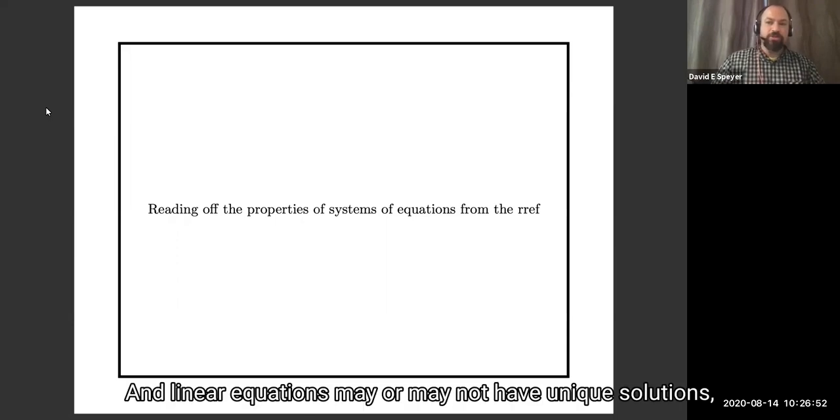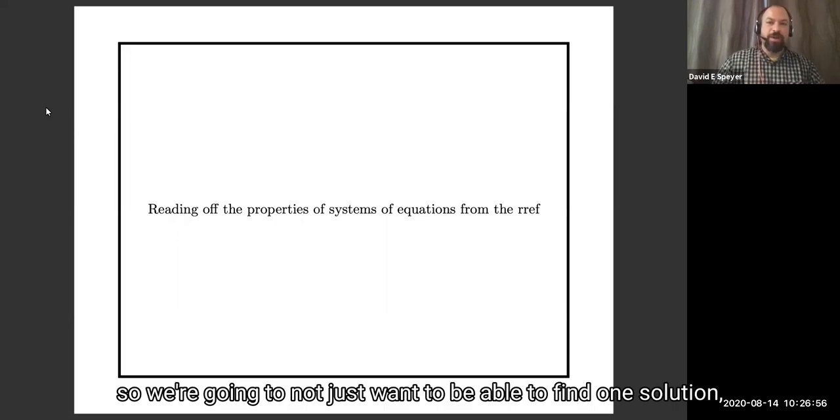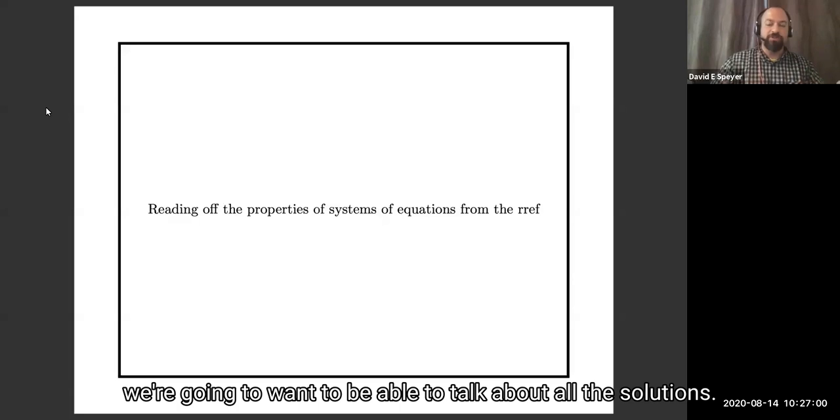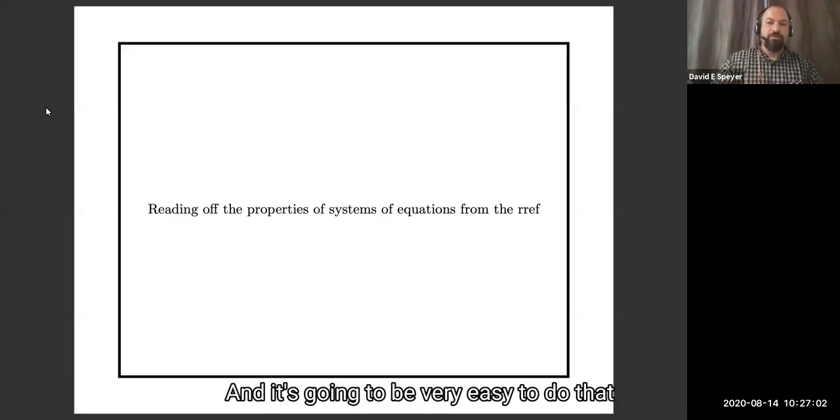And linear equations may or may not have unique solutions, so we're going to not just want to be able to find one solution, if there is one, we're going to want to be able to talk about all the solutions. And it's going to be very easy to do that in the row reduced echelon form.